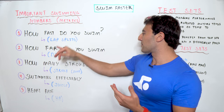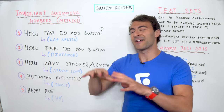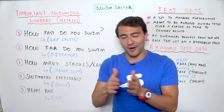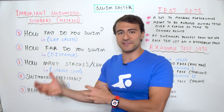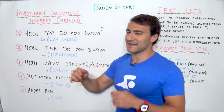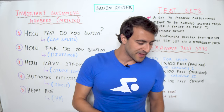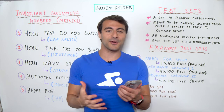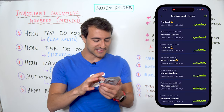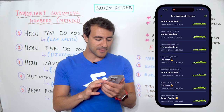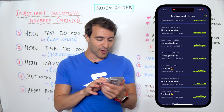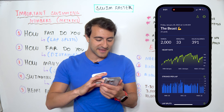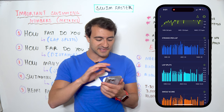You should really know how far you're swimming and how fast you're swimming. To go a layer deeper, I want to pull up the MySwimPro app. I'm going to screen share so you can see exactly what I'm doing. I'll pull up an old workout I did called 'The Beast' — a 2,000-yard workout completed in 33 minutes.